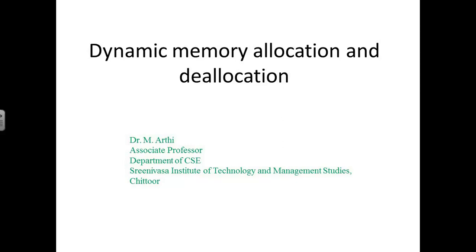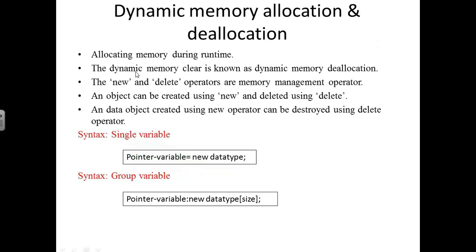Allocating memory during runtime is called dynamic memory allocation, and releasing that memory is called dynamic memory deallocation. The new and delete operators are the memory management operators in C++. In C programming we used malloc, calloc, and free. Similarly, in C++ an object can be created using the new operator and destroyed using the delete operator.